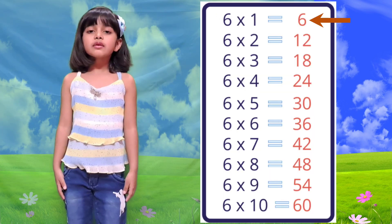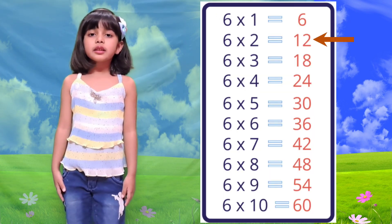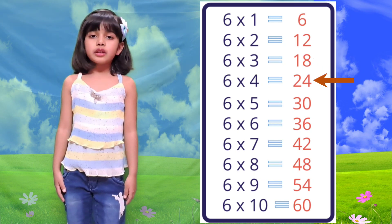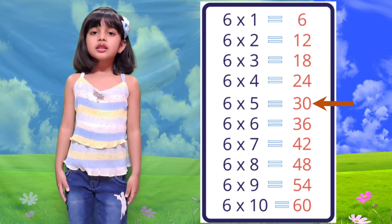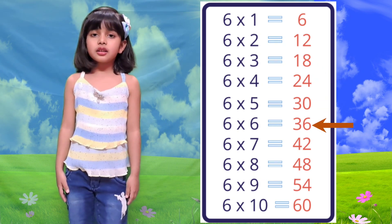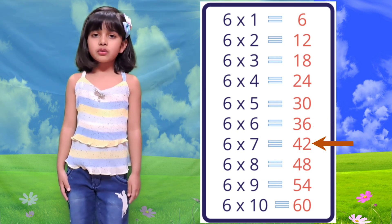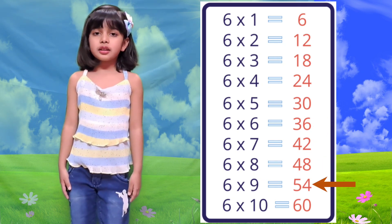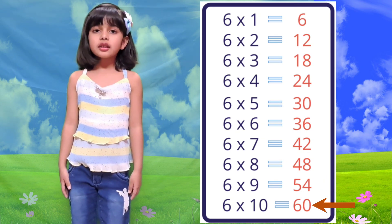Table of 6. 6 1 is 6, 6 2 is 12, 6 3 is 18, 6 4 is 24, 6 5 is 30, 6 6 is 36, 6 7 is 42, 6 8 is 48, 6 9 is 54, 6 10 is 60.